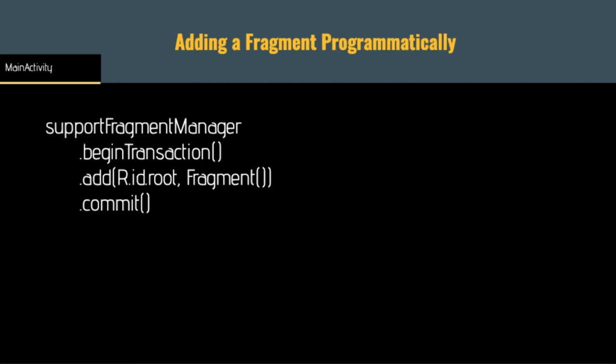We can also add a fragment programmatically, which demonstrates both the fragment manager and the fragment transaction. Within MainActivity, we get a reference to the support fragment manager, then call beginTransaction. Everything after beginTransaction defines that individual transaction — in this case, we add a fragment to the container with an ID of root. Fragments must be added to some type of view group, just like any other view. Once we've defined what's in the fragment transaction, we call commit, which processes the transaction and starts the process of adding or removing fragments to the screen.